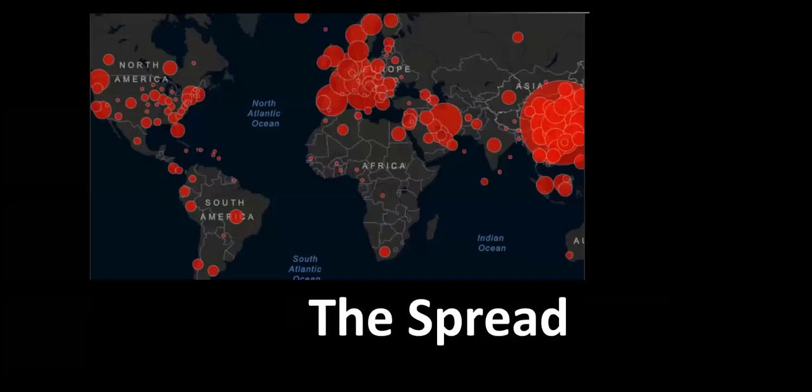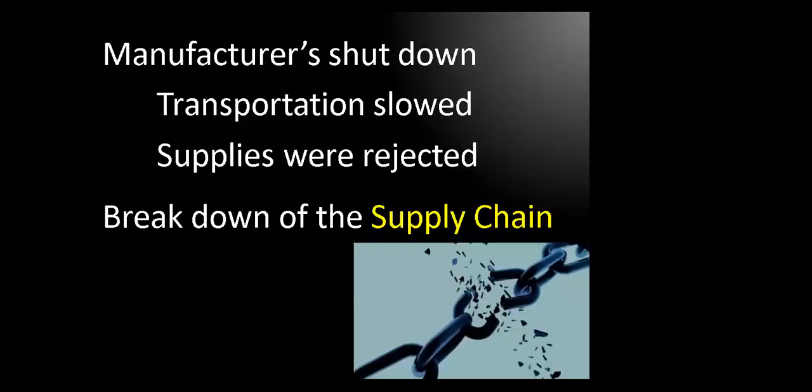When the pandemic hit, started spreading, we saw the breakdown of so many things that we took for granted, especially our supply chain. The fact of the matter was this, companies were shutting down, transportation was being blocked, materials being rejected, and this system, this system that was already precarious to begin with, broke down and we couldn't get what we needed.